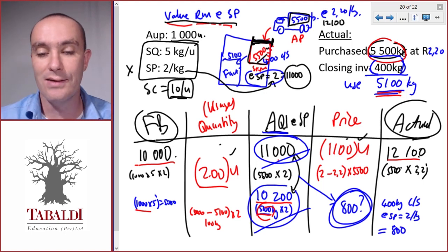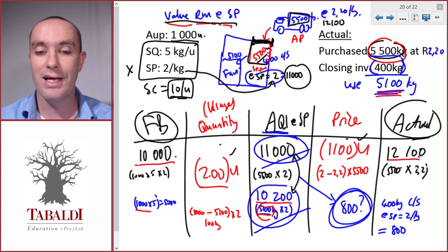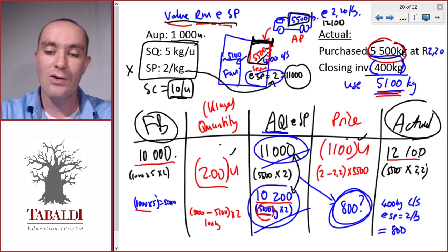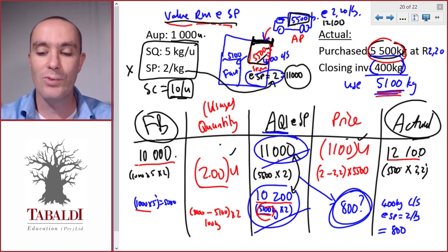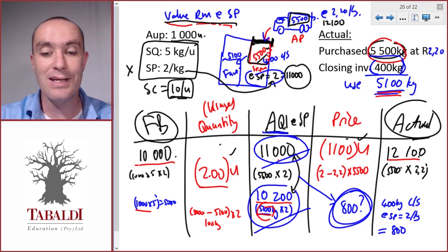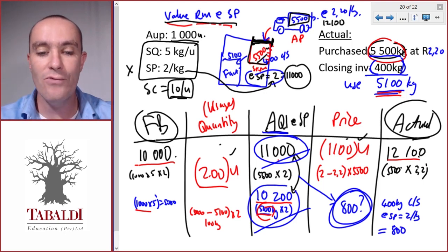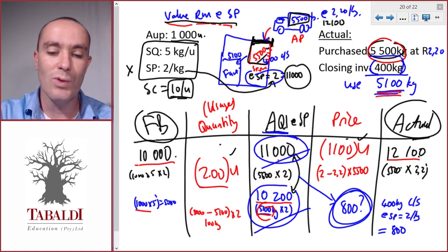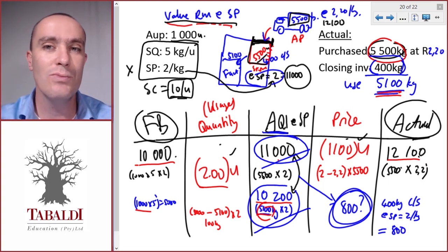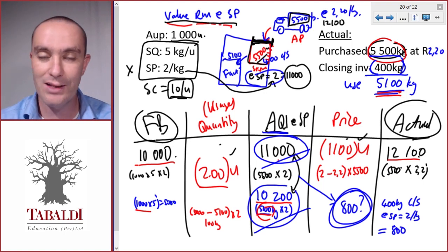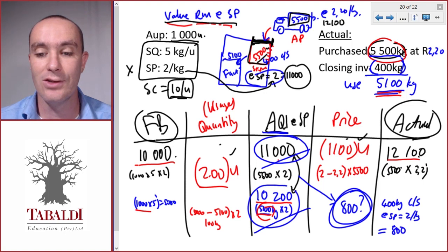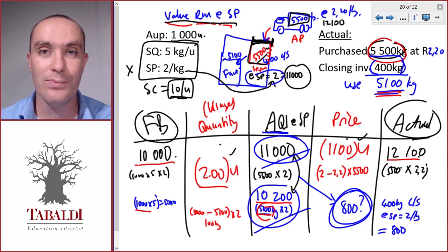To summarize: valuing raw material at standard price means we convert the price variance immediately when it enters the company — at the point where it occurs. If we value at actual, we only see the variance once we start using it in the factory, which might be two months later. So even though we purchased at the wrong price, the variance is only calculated when we use it. That's why it's better to value raw material at standard cost. Now let's look at an example where we value raw materials at the actual price and see how it differs.